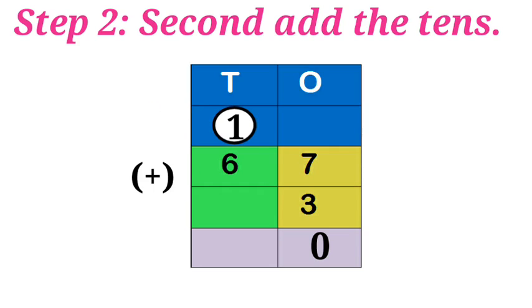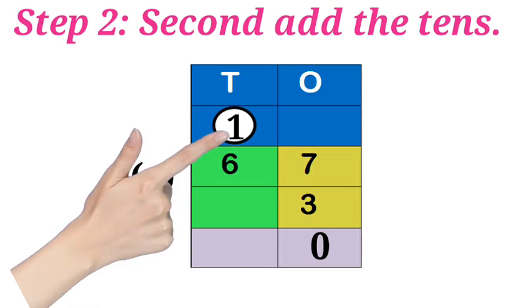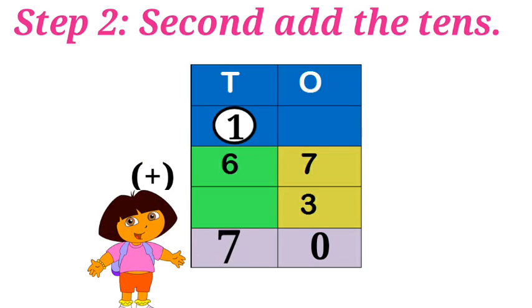Step two: second add the tens column. Six in the mind. Remaining adding plus one. Six plus one is equal to, what is the answer? Seven. So the answer is seven. The total sum: seventy. Did you understand students?